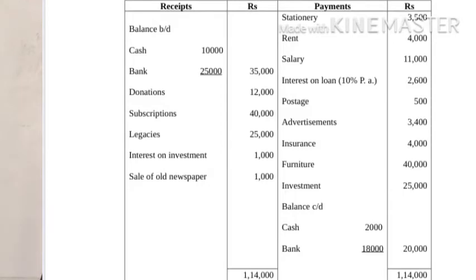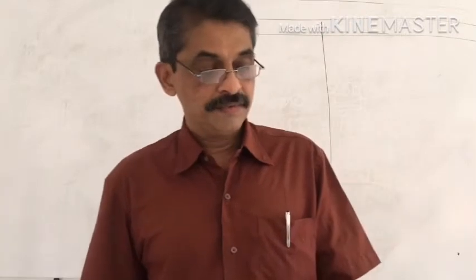The interest on investment is recorded on the income side of the Income and Expenditure account. The sale of old newspaper is also treated similarly. The payment side items such as interest on loan involve an adjustment — it is not simply placed as stated.